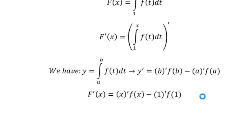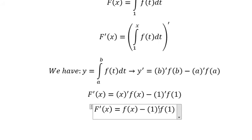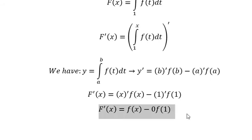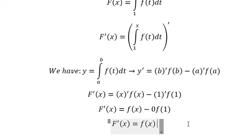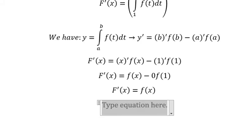This one we have number one. This one is about the constant, so we get number zero. We can simplify like this. Next, we need to find the second derivative of this one, so we have like this.